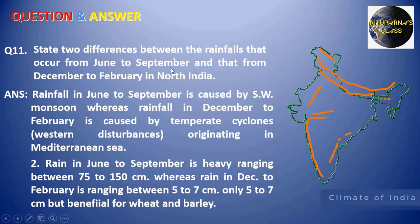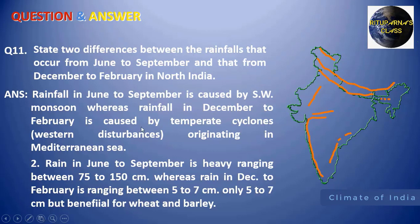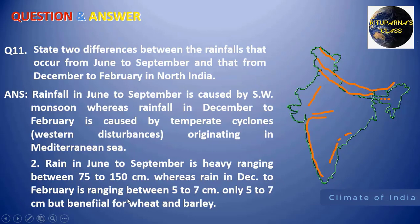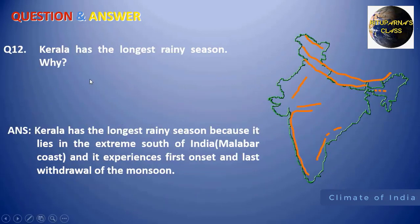Next: state two differences between rainfall from June to September (monsoon season) and December to February in north India. From June to September, rainfall is caused by the southwest monsoon; from December to February, it is caused by western disturbances. The amount of rainfall also varies: the average monsoon rainfall is 75 to 150 cm, whereas December to February rainfall is very low — approximately 5 to 7 cm — but this rainfall is beneficial for wheat and barley cultivation.